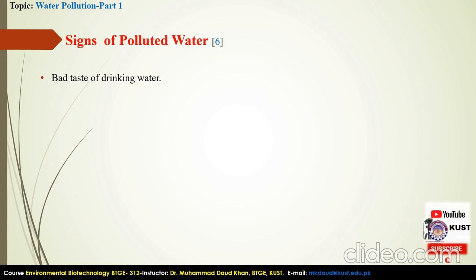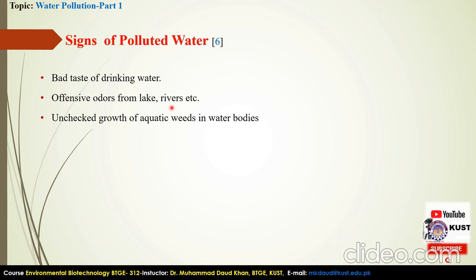If we don't have any analytical tools, there are some basic criteria by which we can judge whether our water is polluted or not. If you are going to drink water and it has a bad taste, it comes under the category of polluted water. If you notice offensive or undesirable odors coming from rivers, streams, and canals, or if you see poor growth of some microeminent aquatic plants such as giant reeds, taifa, or canals of various water bodies, we can say that this is polluted water.